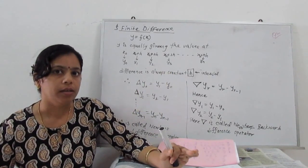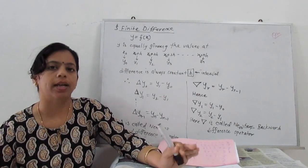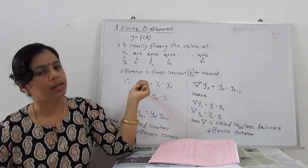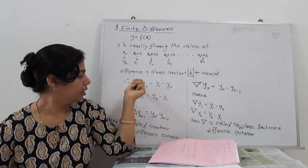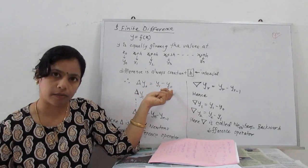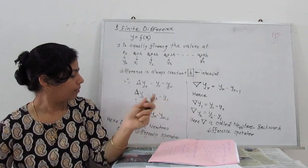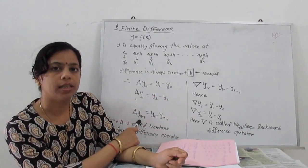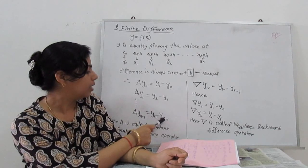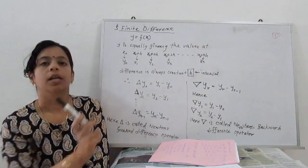Hence we derive two difference operators. One is called Newton's forward operator and the other is the backward operator. The delta sign is called Newton's forward difference operator. Delta of y0 gives y1 minus y0. Delta of y1 gives y2 minus y1. The general formula is: the forward operator of yn-1 is given by yn minus yn-1. Here delta is called the Newton forward operator.